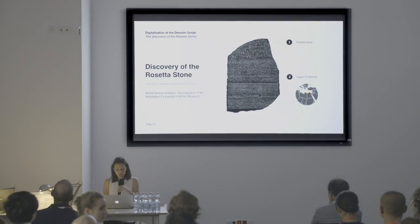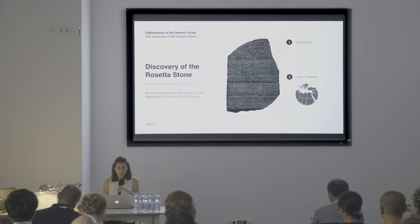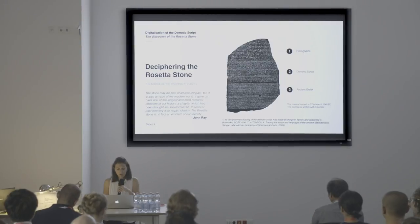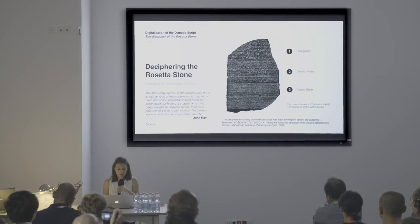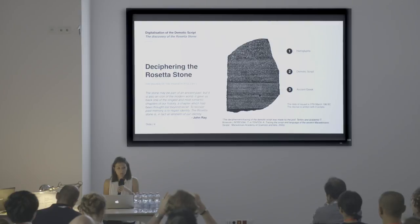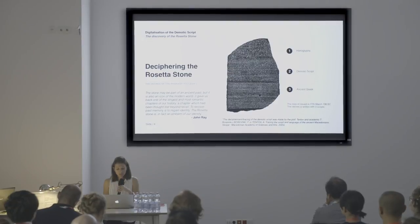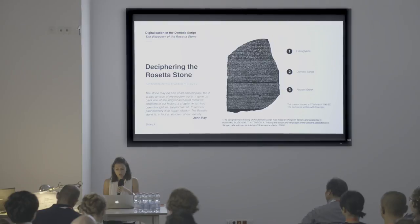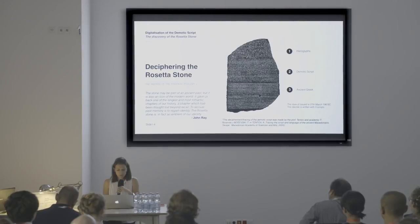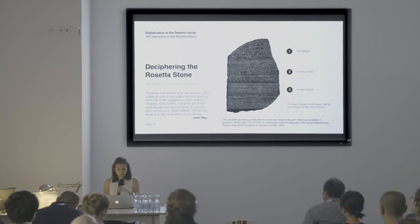It was discovered by a French soldier of Napoleon's army in 1799, and from 1882 until these days it's placed in the British Museum in London. A special decree has been inscribed on it to glorify the pharaoh Ptolemy V, and according to the present day calendar it was written on 27 March 196 BC. I will explain the main characteristics of this demotic script, which were deciphered and already traced by two professors from Macedonia, Professor Tentov and academic Boshevsky. This research is already published and approved by different institutions from all around the world.